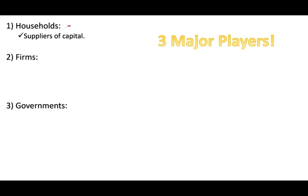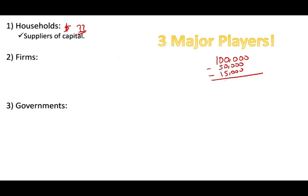Households are suppliers of capital, or suppliers of money. Think about when you work — if you make $100,000 per year, you might spend $50,000 on living expenses and pay another $15,000 in taxes, leaving you with $35,000.